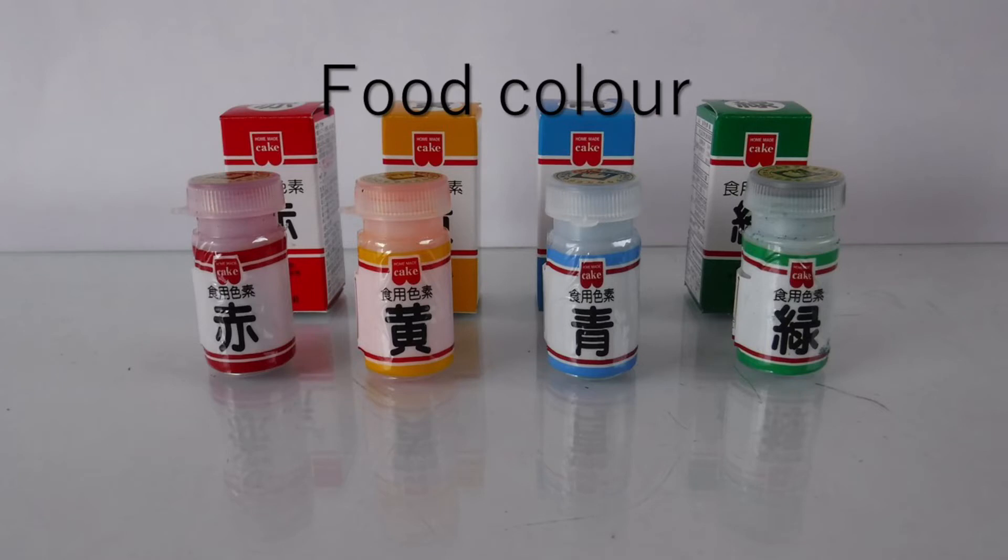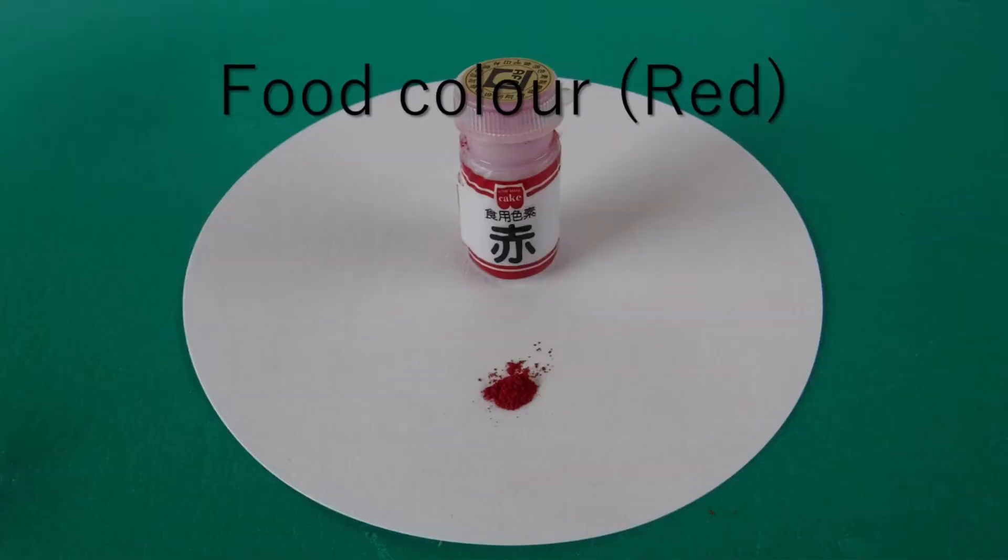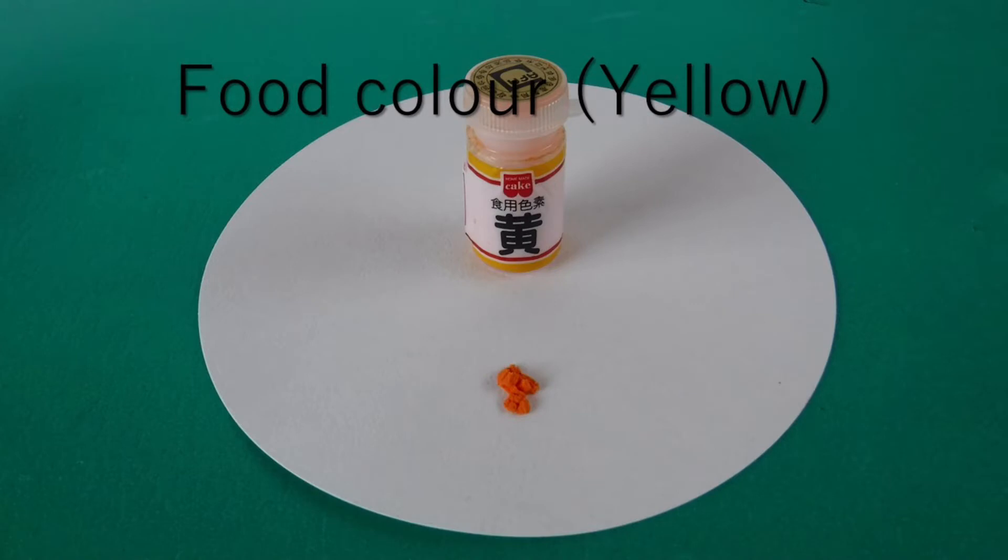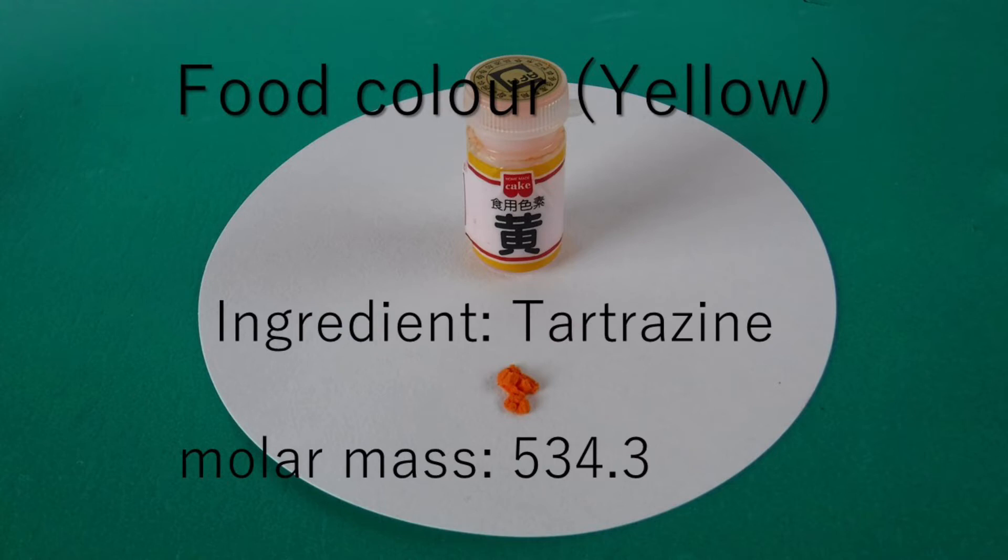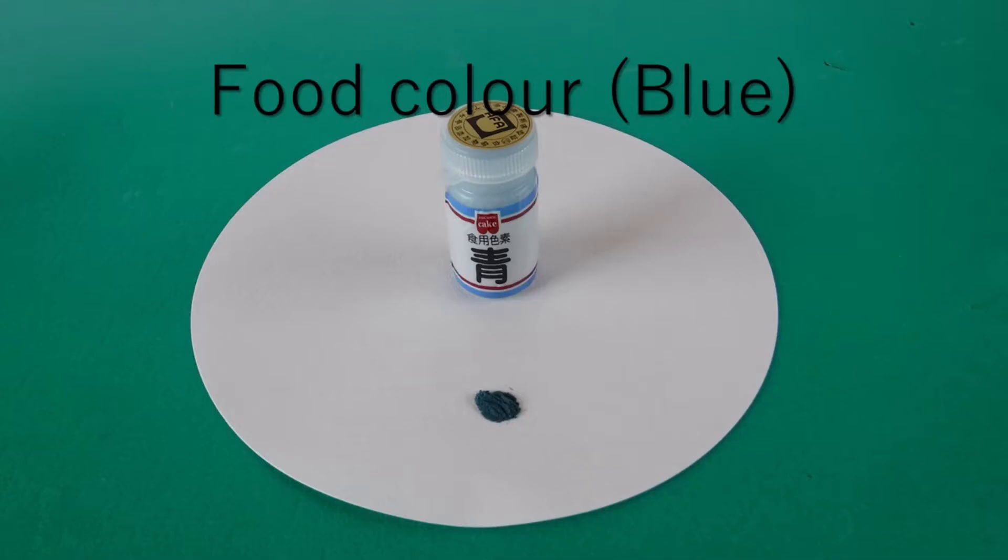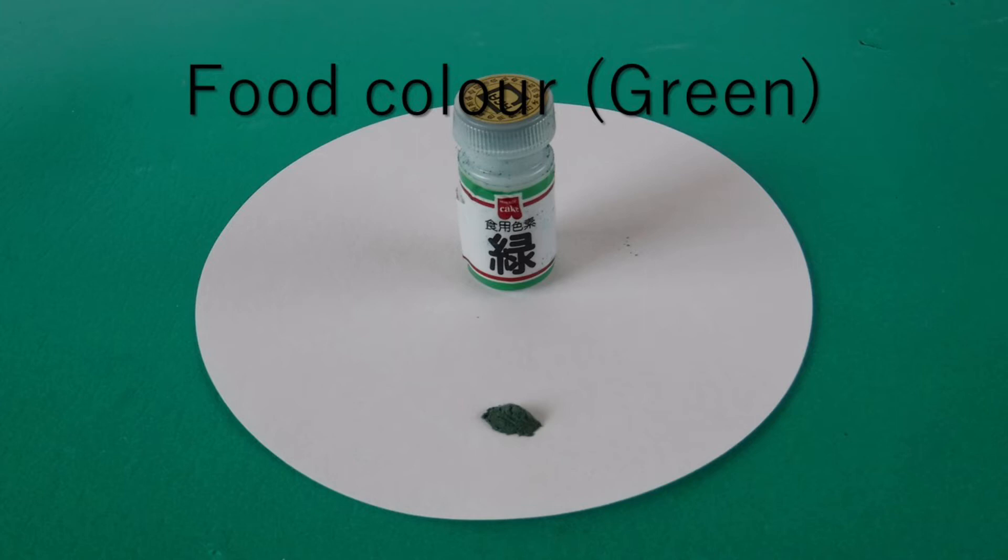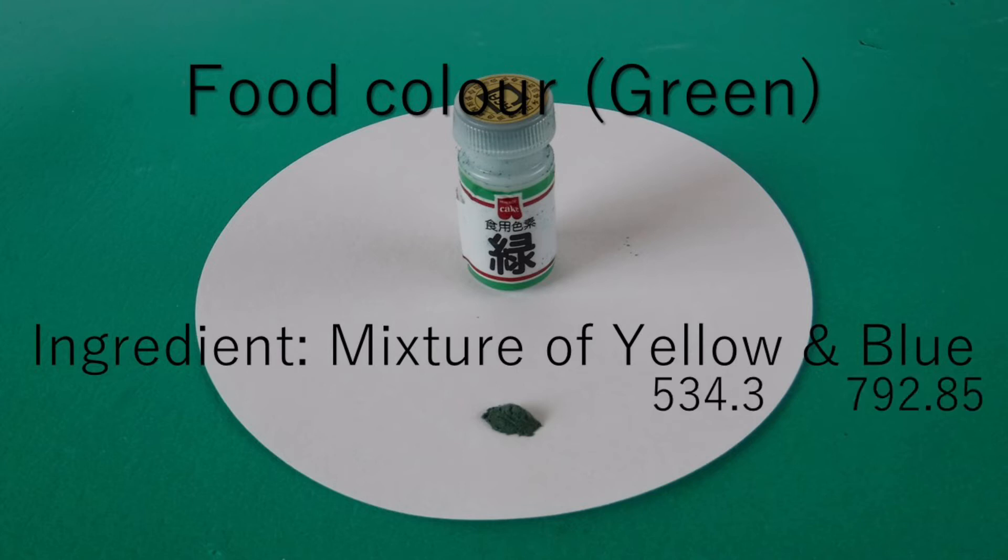These are food colors which are used in the experiment. The ingredient of this red color is new coccine and its molar mass is 604.48. This yellow is tartrazine and its molar mass is 534.3. This blue is brilliant blue and its molar mass is 792.85. Green color is a mixture of yellow and blue. Each color has different molar mass.